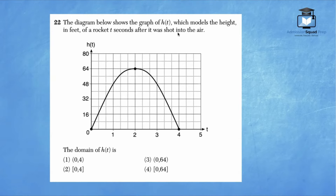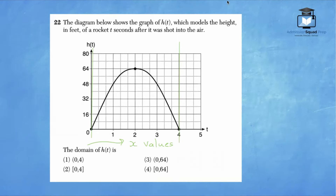Number 22: the domain of h of t, which models the height of a rocket t seconds after launch. The domain is the set of all possible x values. Using vertical lines, x values start at 0 and end at 4. There are closed circles at both 0 and 4, so the domain goes from 0 to 4 inclusive, using brackets. Answer choice 2 is correct.